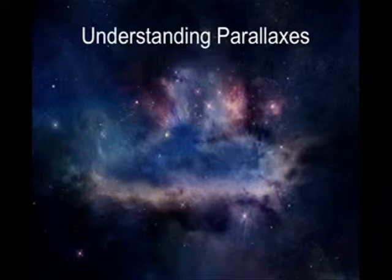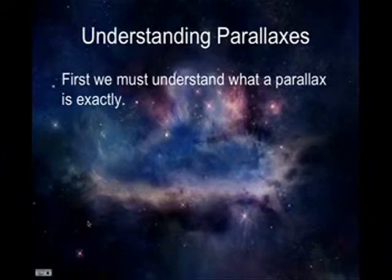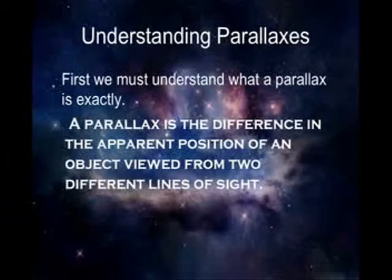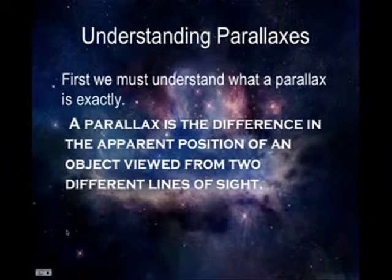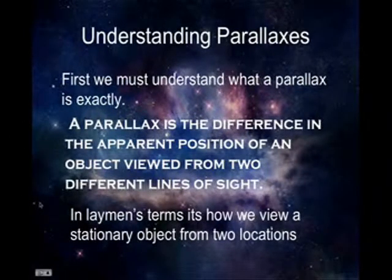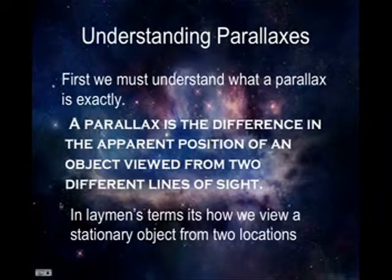We'll be understanding briefly what exactly a parallax is. A parallax is the difference in the apparent position of an object viewed from two different lines of sight. In layman's terms, it's how we basically view a stationary object from two locations. On our next slide, we will show you a video of what a parallax is.